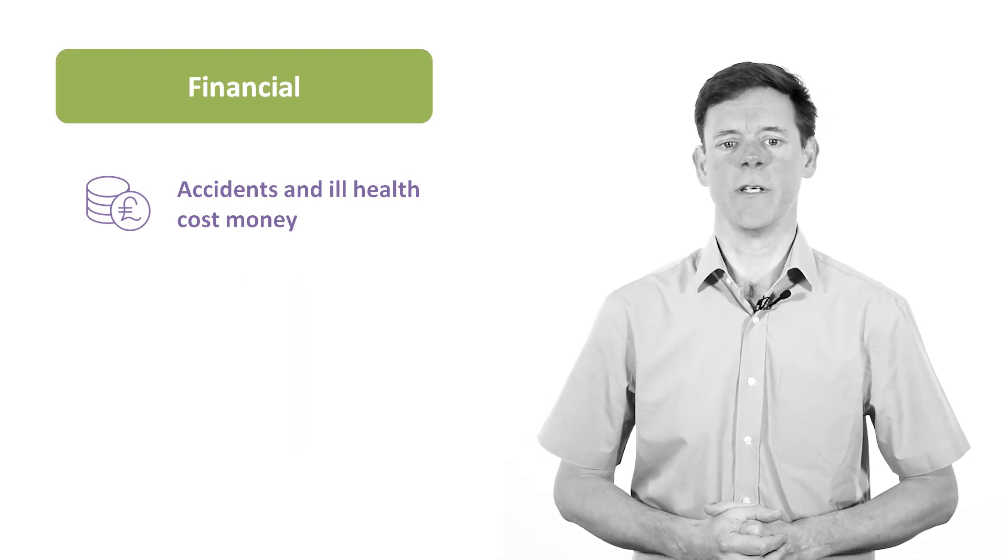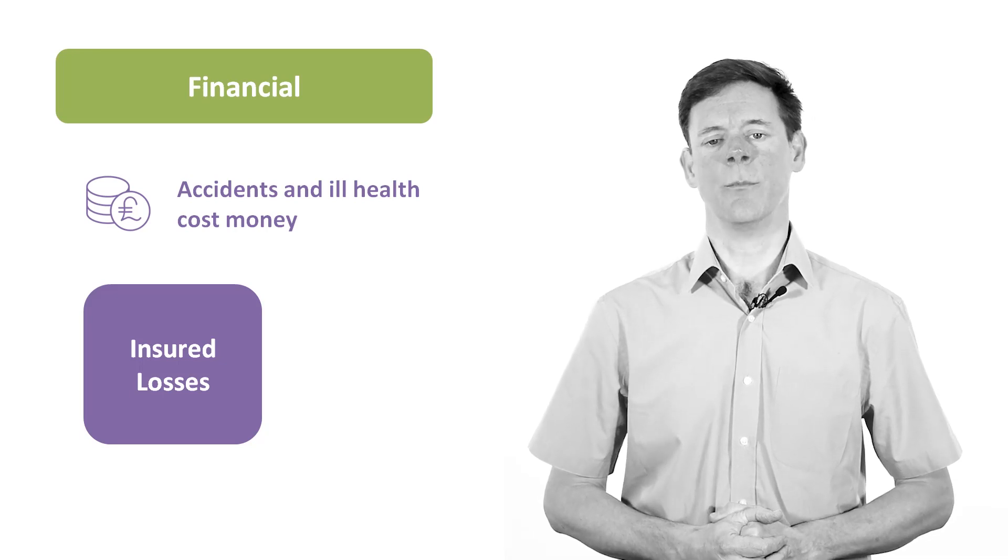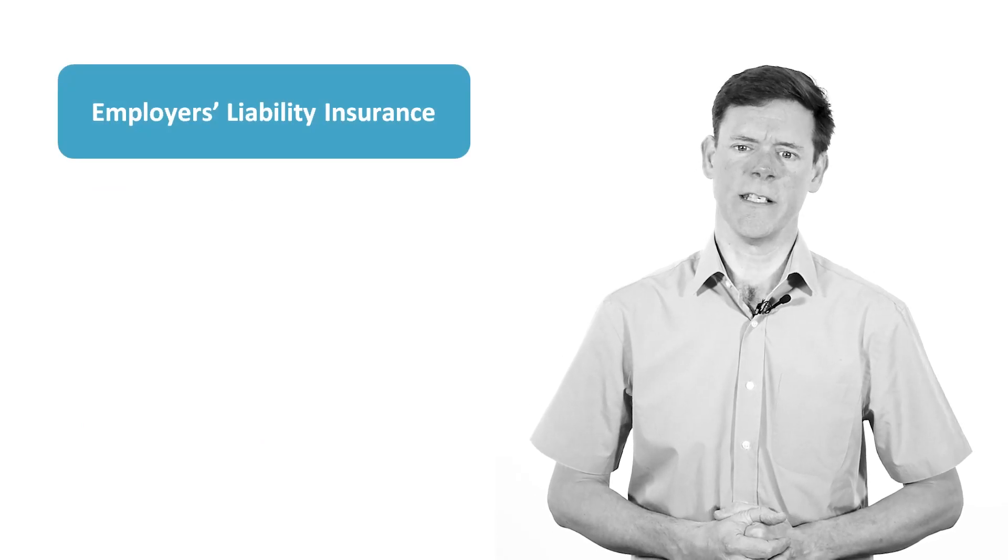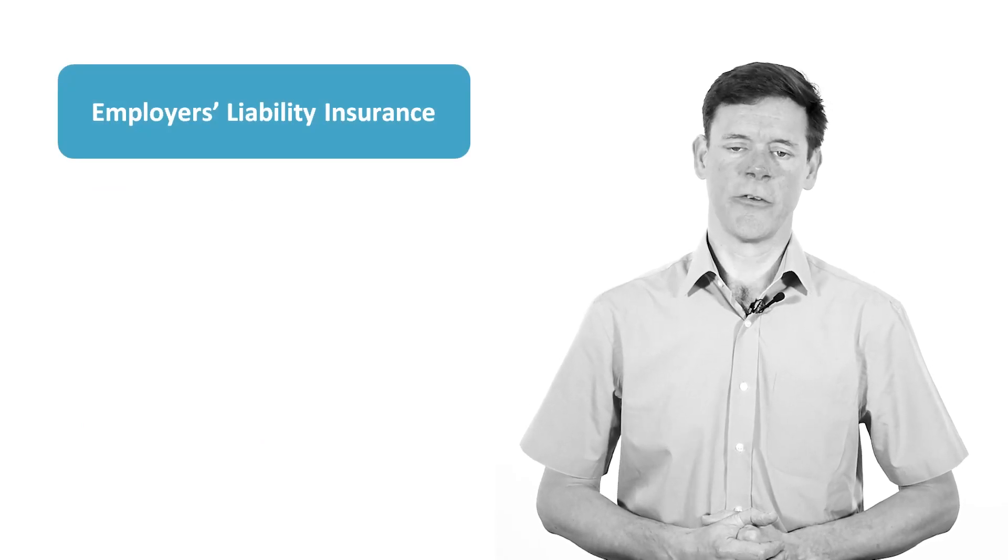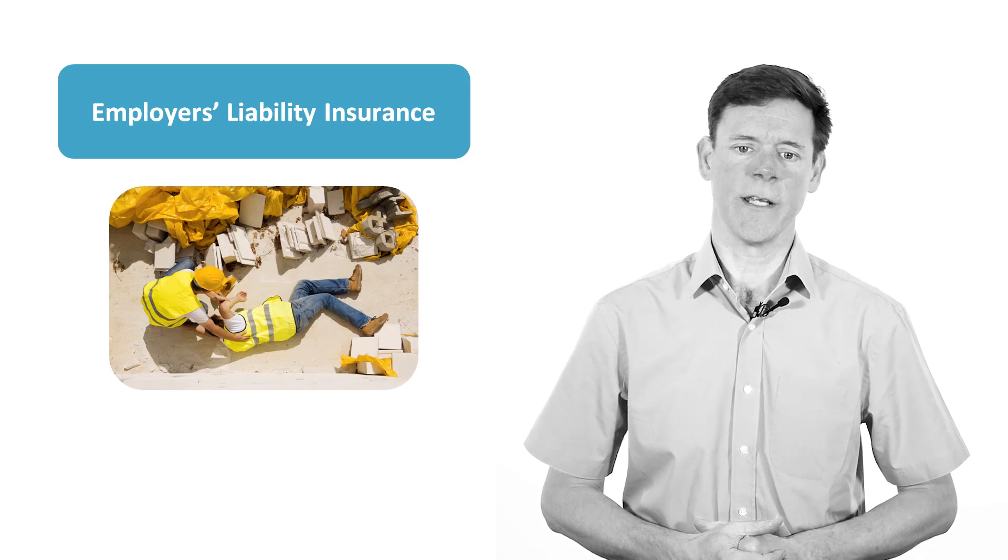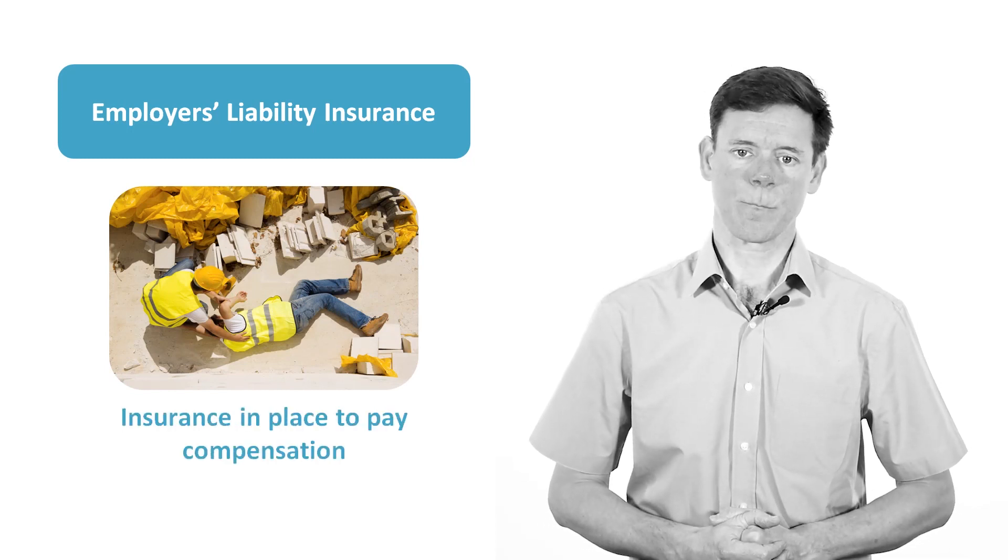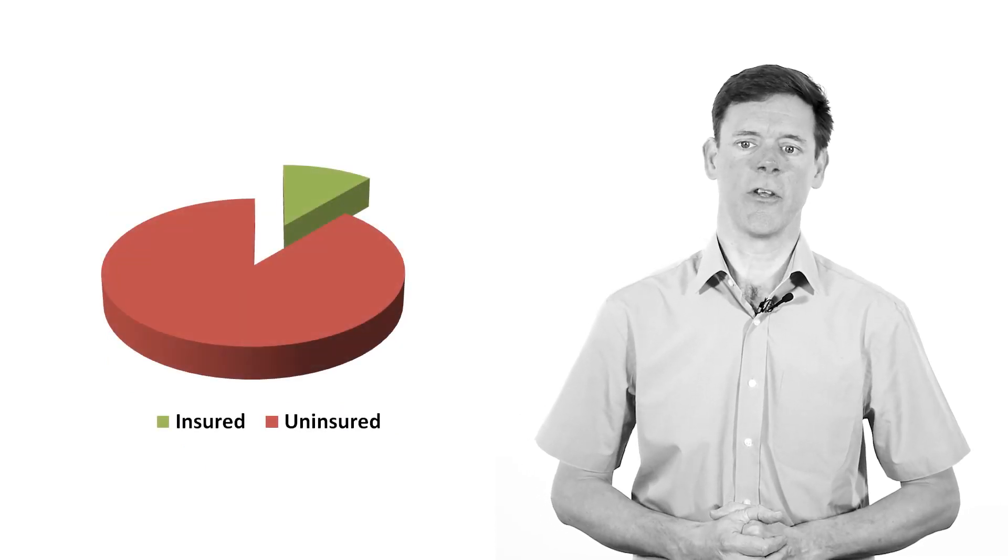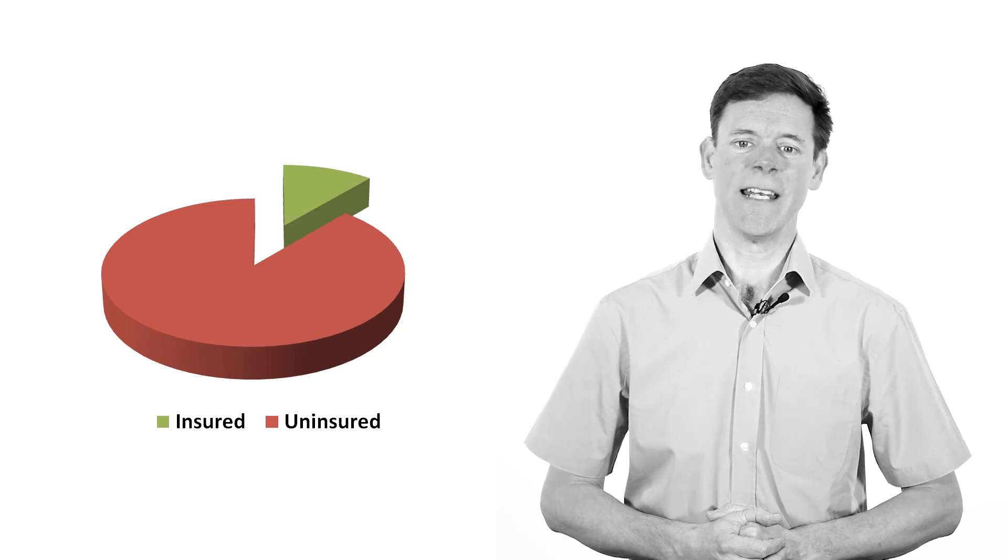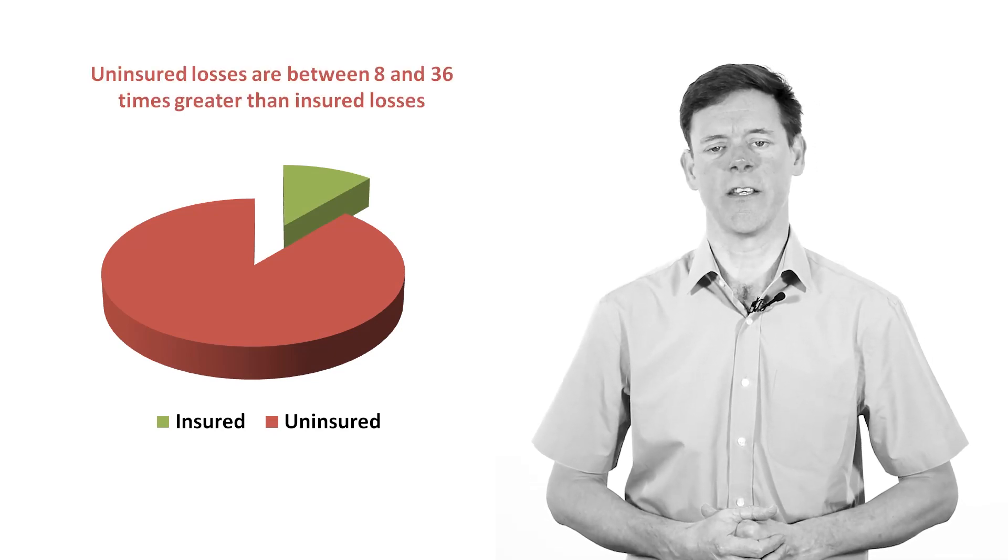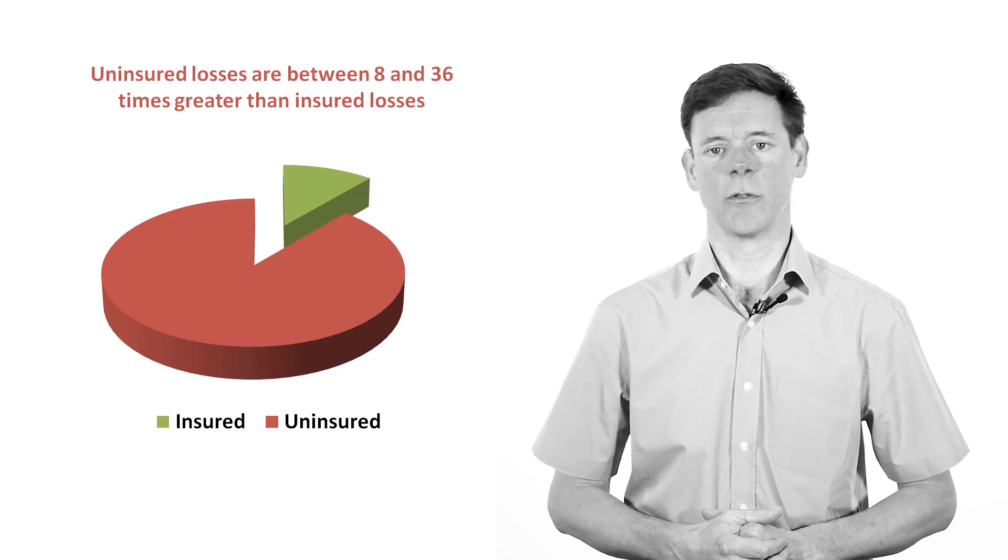Some of these losses can be insured against, but many of them will be uninsured. For example, it is compulsory to take out employers' liability insurance, so that if an employee is killed or injured at work, there is insurance in place to pay compensation. However, many losses associated with workplace accidents are uninsured, and it has been estimated that uninsured losses are between 8 and 36 times greater than insured losses.